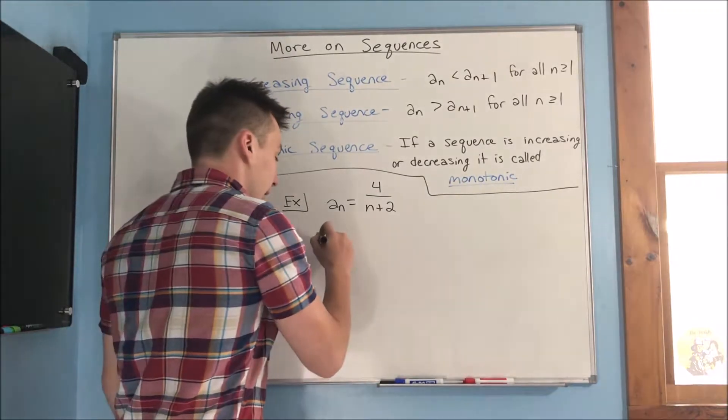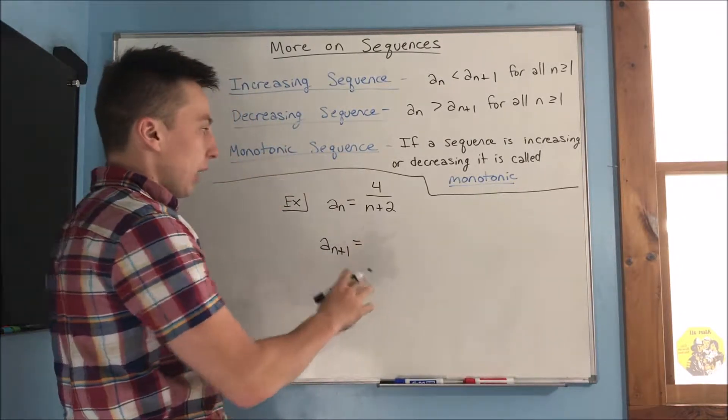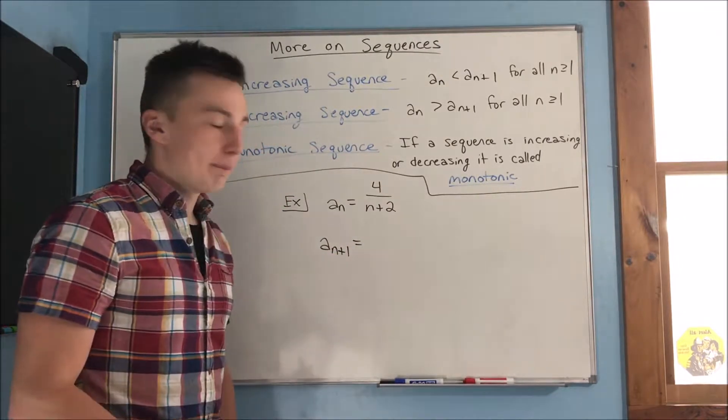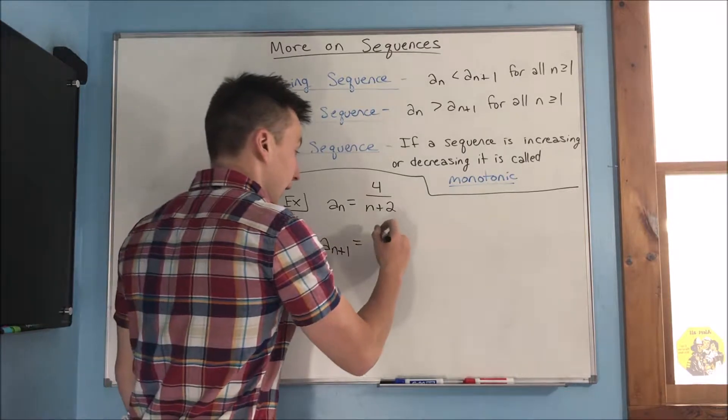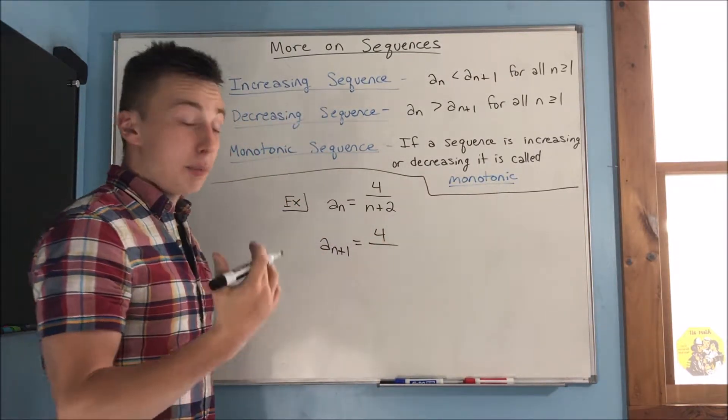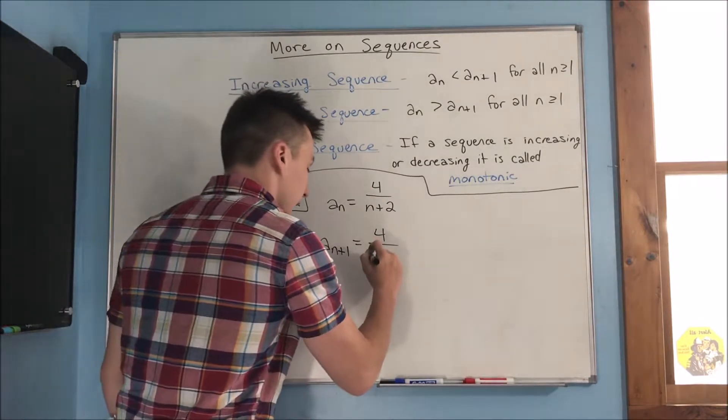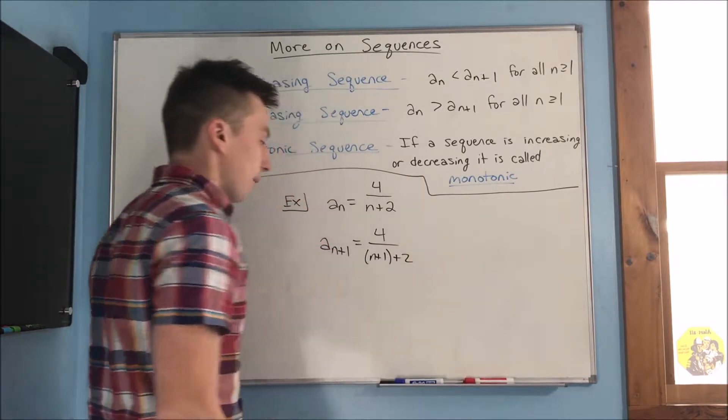Depending on if a sub n plus 1 is less than or greater than a sub n. Now, all we would have to do here now is just figure out what a sub n plus 1 is, and then we can compare it to a sub n. Now, if we try to find a sub n plus 1, instead of plugging in an n here, we're going to have an n plus 1. Because we have an n plus 1 in the subscript.